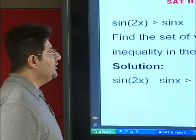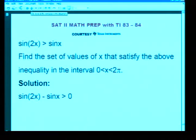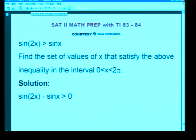Now let us say we have an inequality of this form. We would like to find the values of x for which sin(2x) is greater than sin(x) and x lies between 0 and 2π.